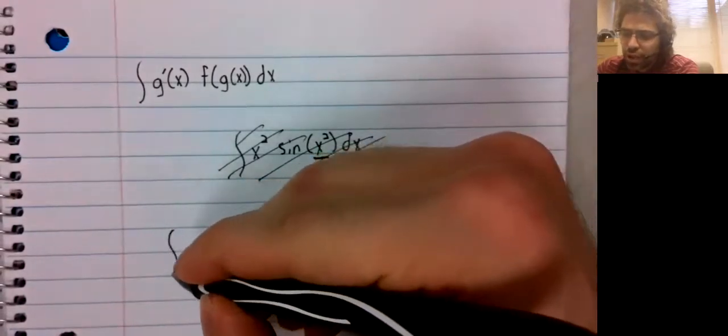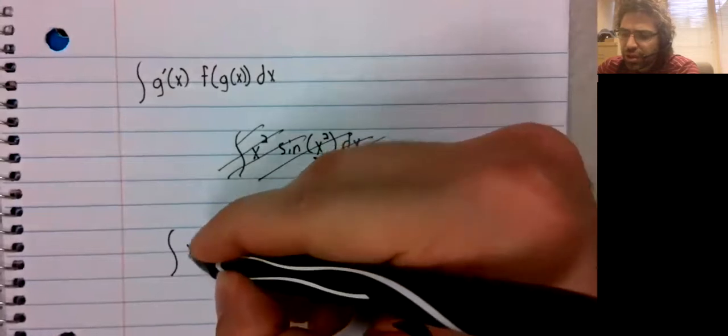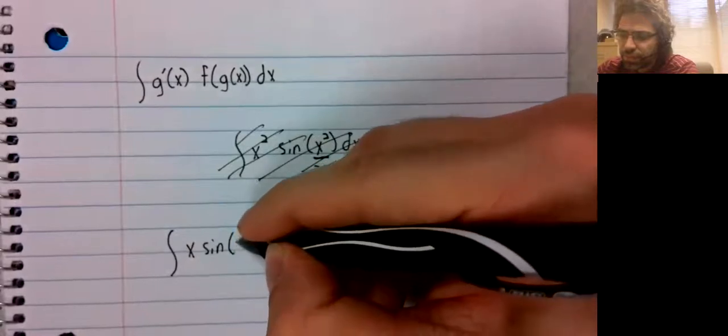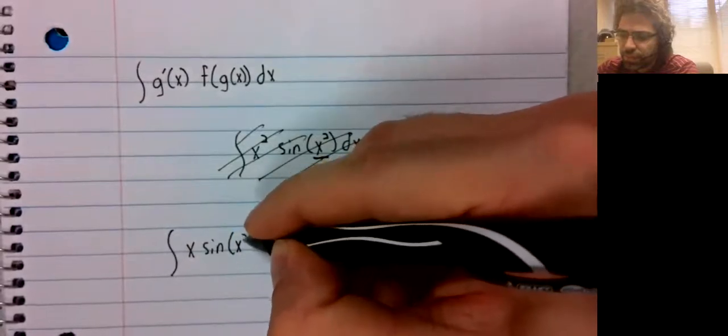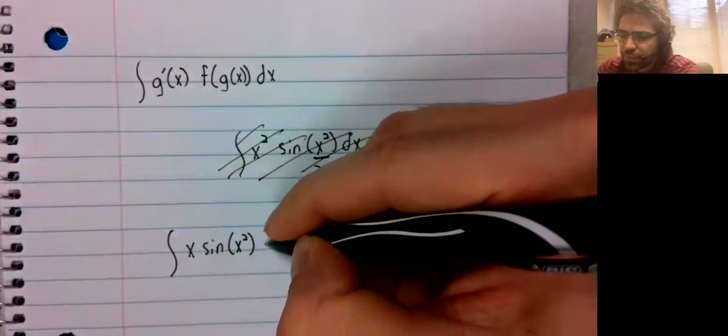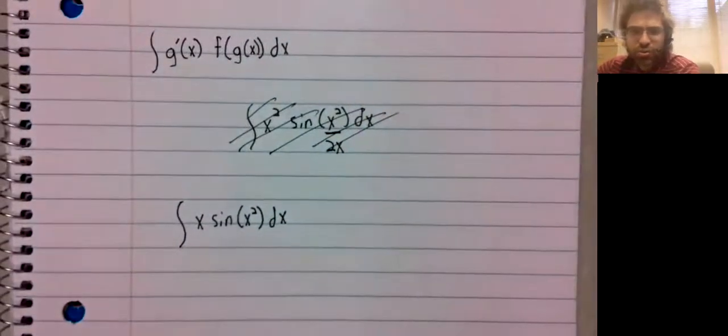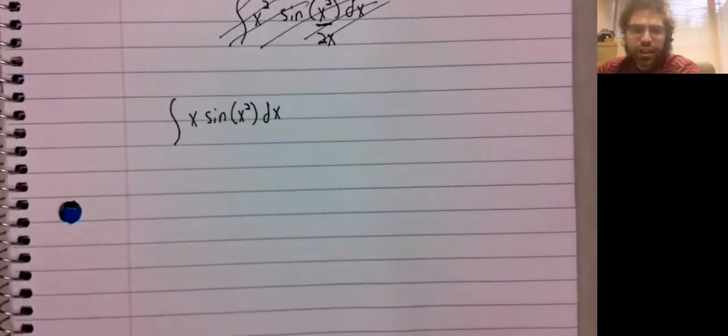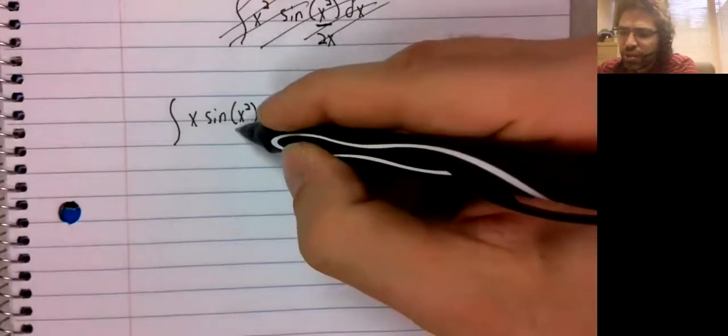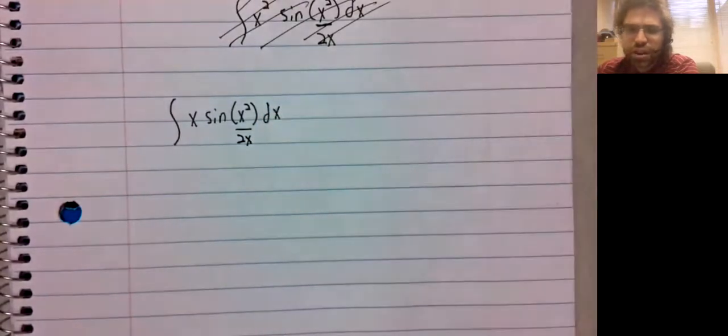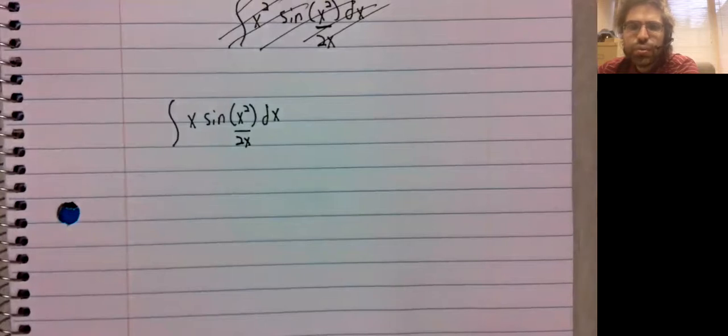The only exception to this is if we almost have the derivative and are only off by a constant. So the derivative of x squared is again 2x.